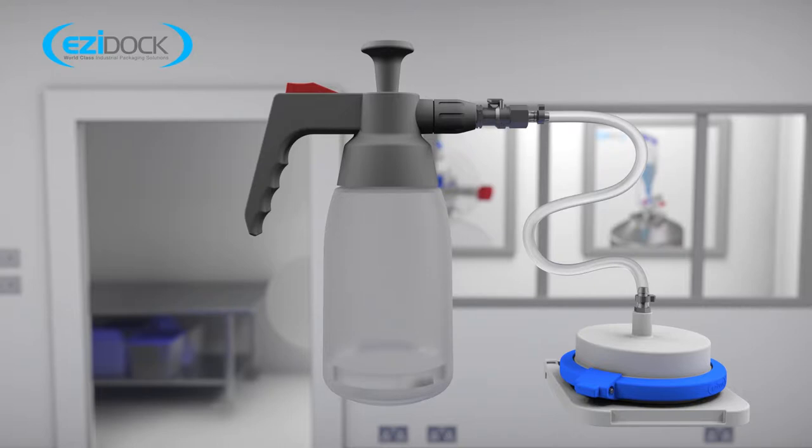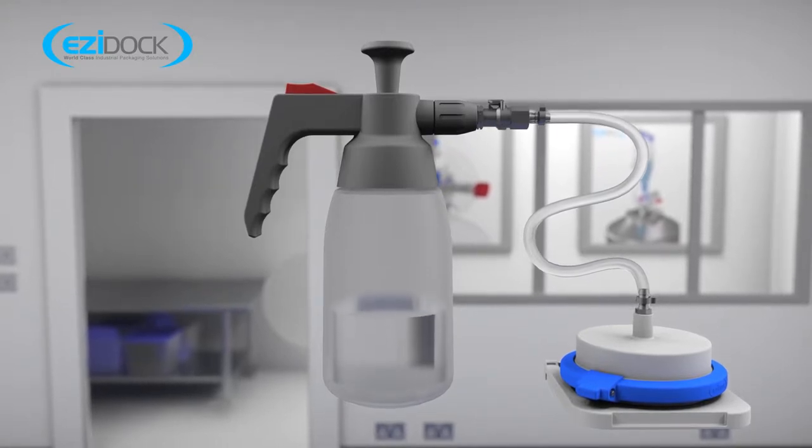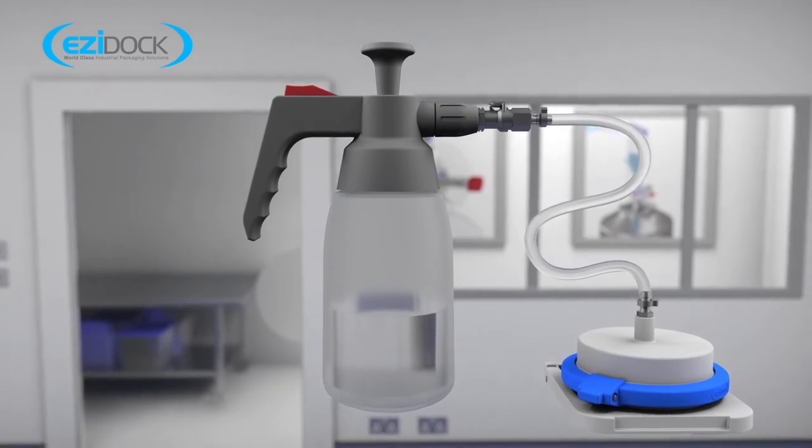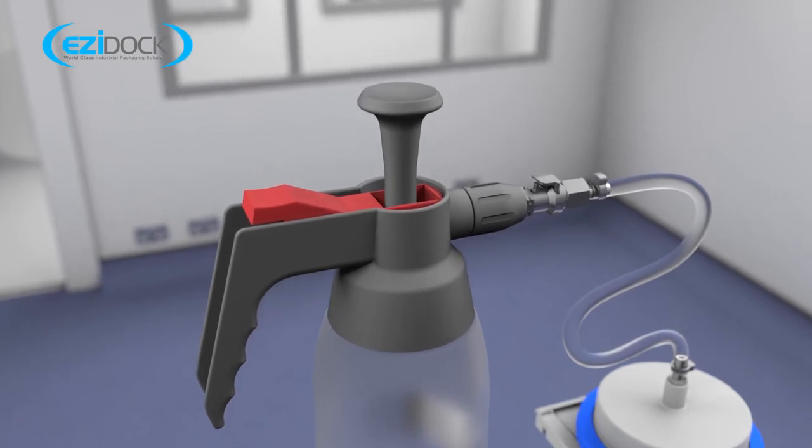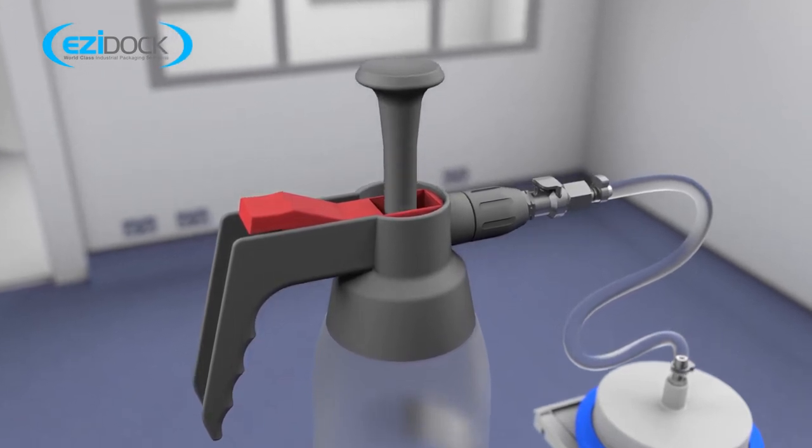First ensure that the spray dispenser bottle on the CSV damp down system has sufficient liquid to complete the safe change operation. Pump the handle on top of the bottle to increase the pressure within the spray dispenser.